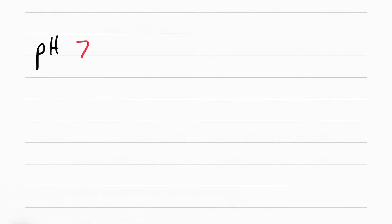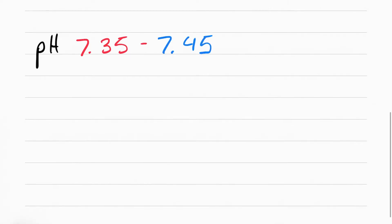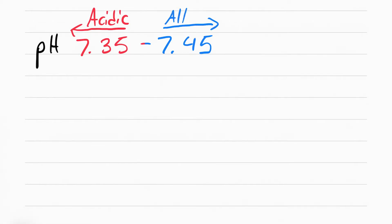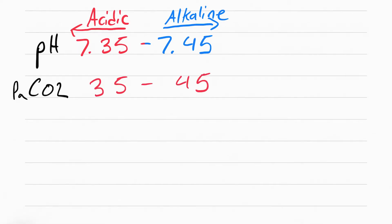Here's everything you need for arterial blood gases. There are several labs you need to memorize. You need to know that pH is 7.35 to 7.45. When a pH is below 7.35 it's considered acidic, and when the pH is above 7.45 it's considered alkaline. You also need to know that CO2 is 35 to 45, and that CO2 is acidic — so the higher the CO2, the more acidic the patient is.